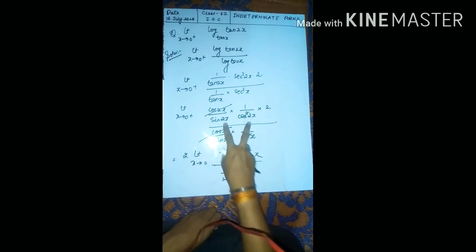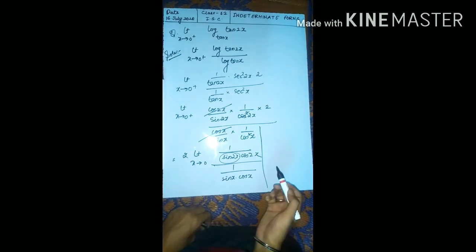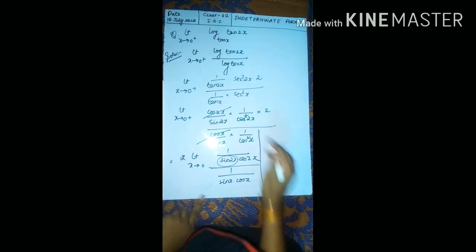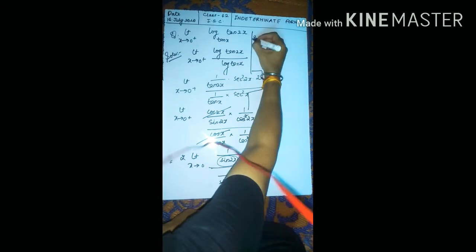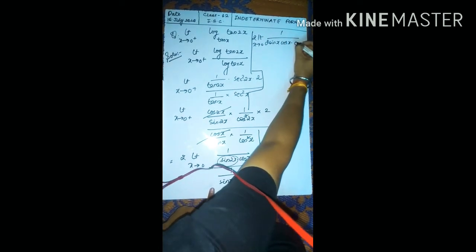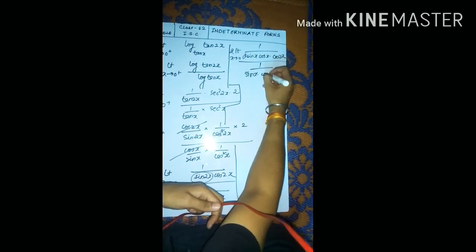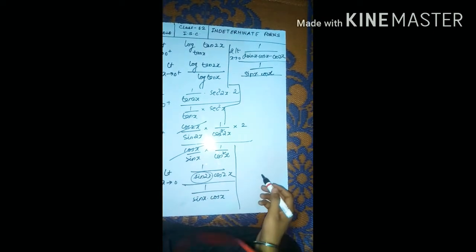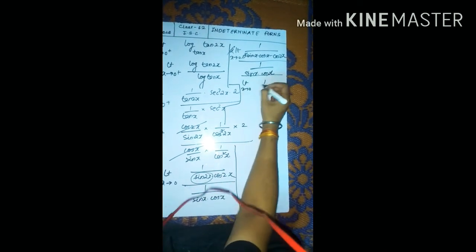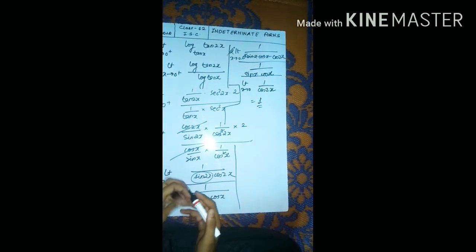We can write sin(2x) = 2·sin(x)·cos(x). After simplification we get 2·[sin(x)·cos(x)·cos(2x)] / [sin(x)·cos(x)], so sin(x)·cos(x) cancels, leaving limit x→0 of 1/cos(2x). Putting x→0: cos(0) = 1, so the final answer is 1.